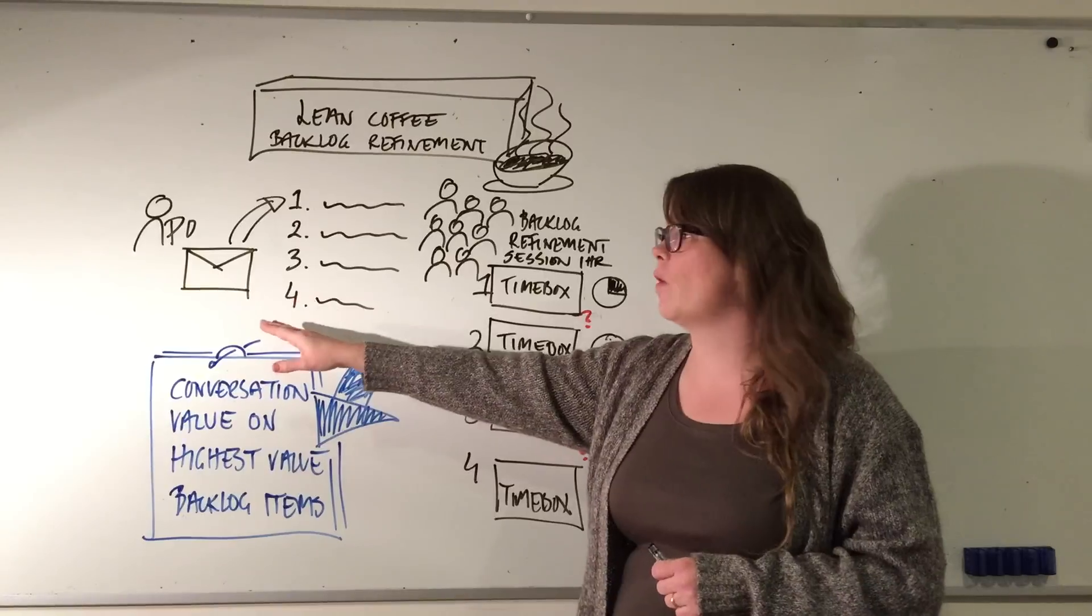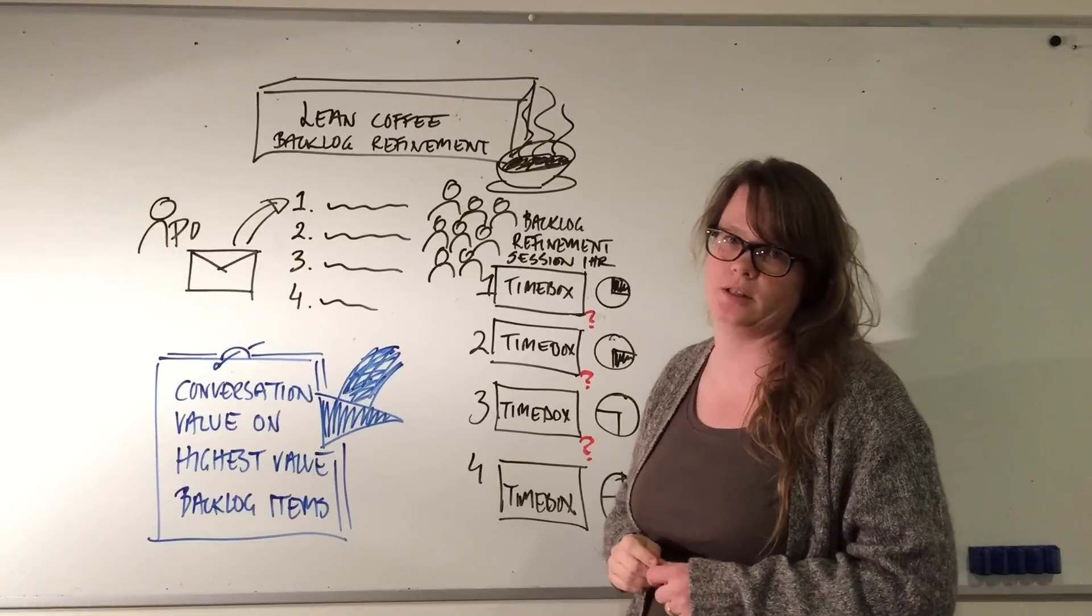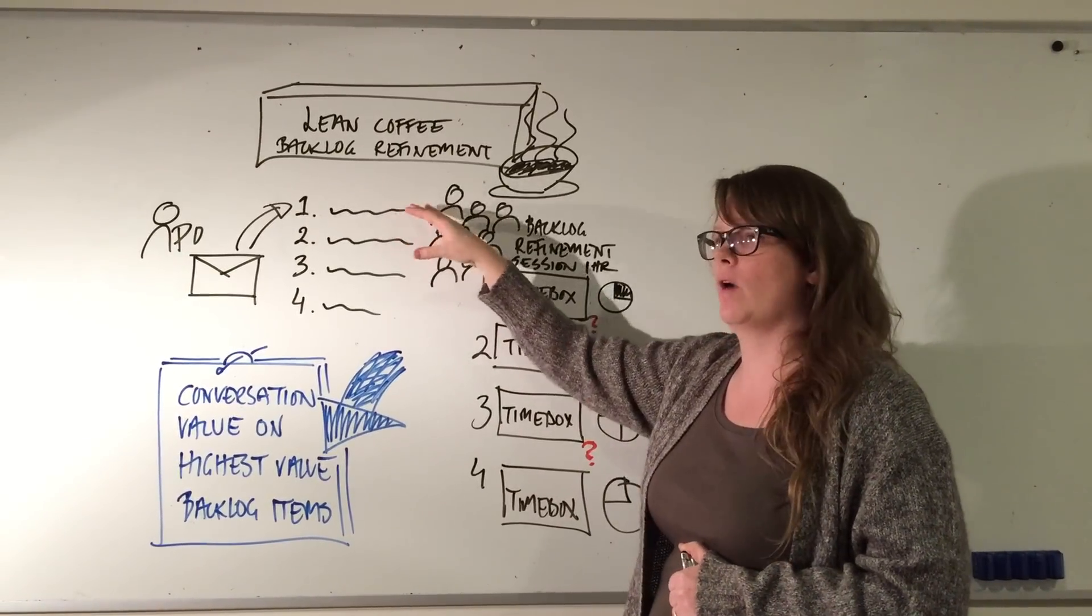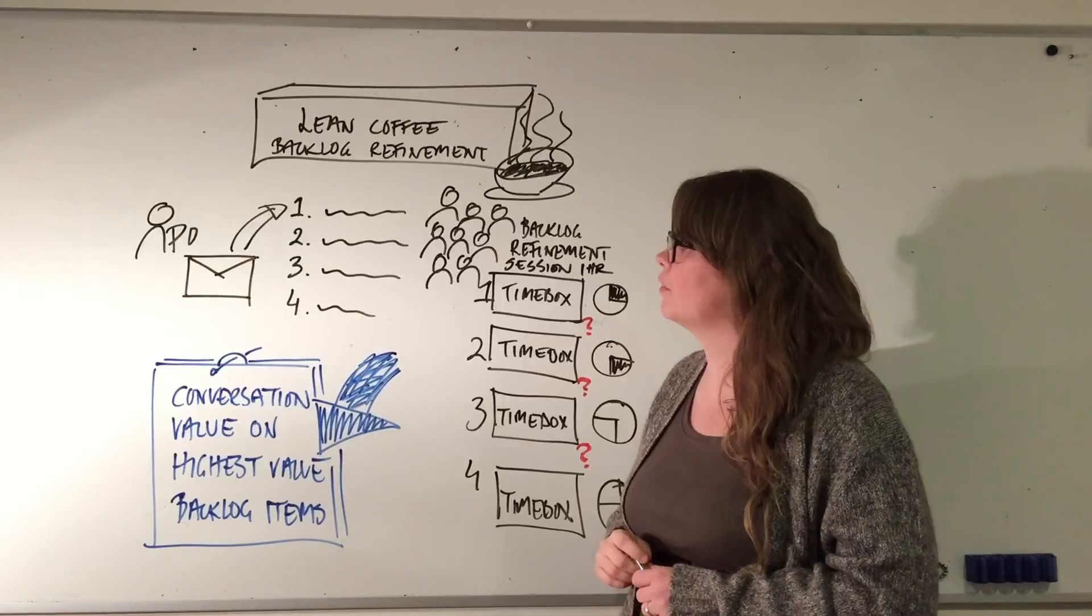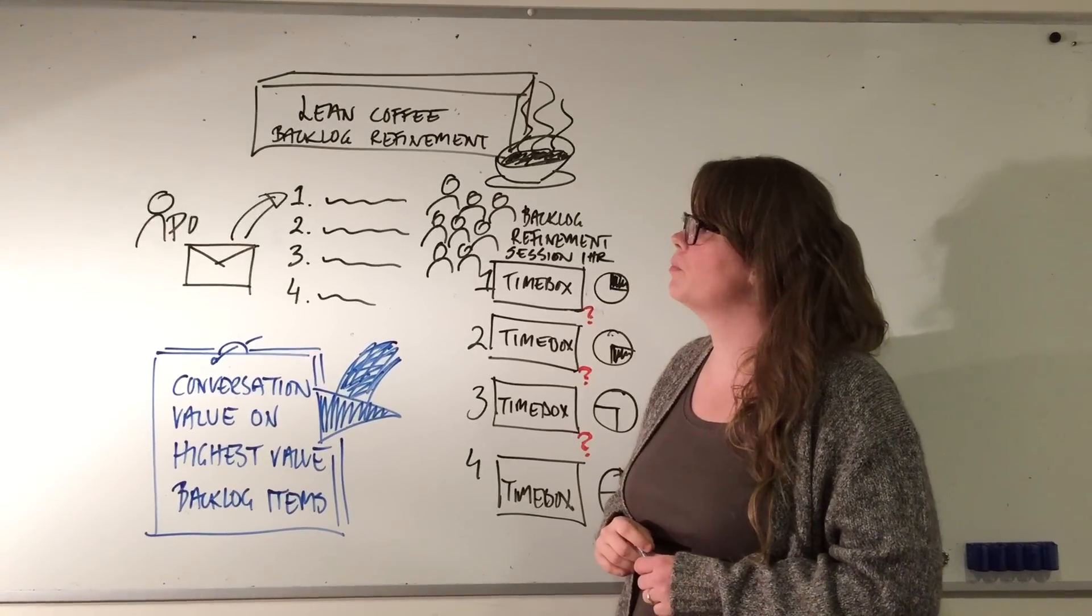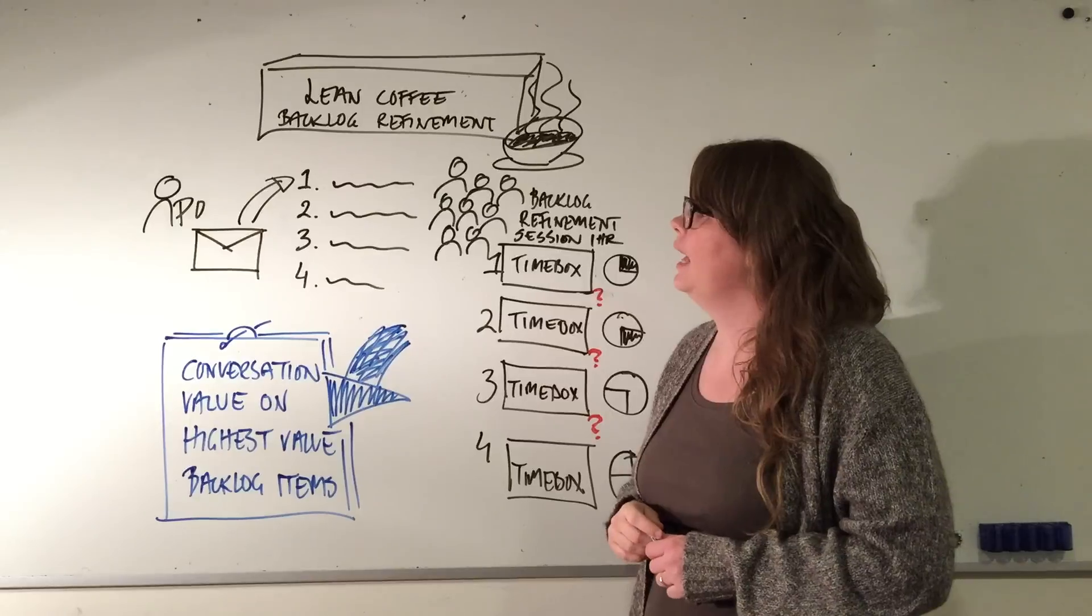The product owner sends an email the day before with the list of conversation topics ordered in importance. Whatever stage your backlog item is in, it could be a conversation topic to bring into the backlog refinement. The most important thing is that topics are sorted in order of importance.